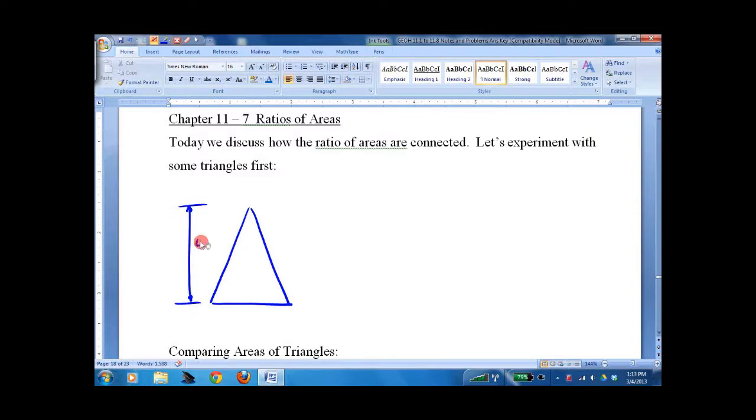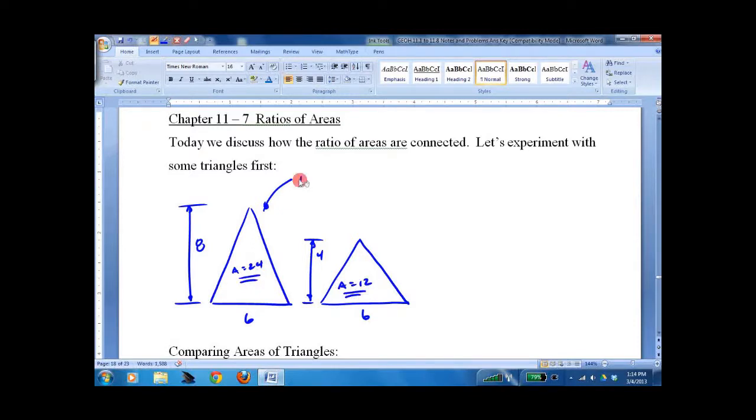We'll call the height 8 for this one and 4 for this one, with a base of 6. So we would say that just by looking at it, 24 over 12 in terms of area. This one has twice the area. The reason it has twice the area is it has twice the height. Twice the height equals twice the area.